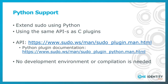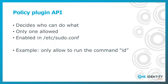Python support has been mentioned a couple of times. You can extend sudo using Python scripts — it uses the very same API as the C-based plugins. On the other hand, there is no need for a dedicated development environment or compiling anything, so it's much easier to distribute these scripts — you can do it even with your configuration management system. The policy plugin API decides who can do what on your system. Only one of these can be loaded at a time, enabled in sudo.conf, and obviously you can also implement it in Python, though it's just a nice exercise and not very practical.